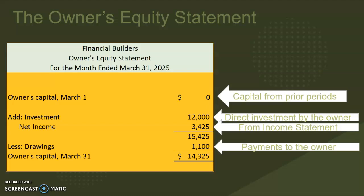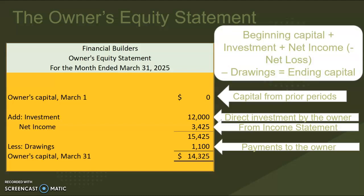We then subtract any payments to the owners in the form of drawings, and that tells us what our new owner's capital is at the end of the month. The formula is: beginning capital plus any investment plus net income — or minus a net loss if they lost equity — and also subtract any drawings. That gets us the ending capital, which in this case is $14,325.